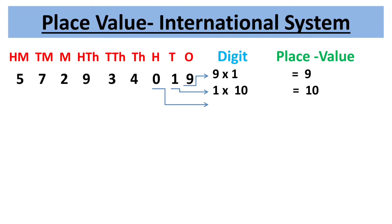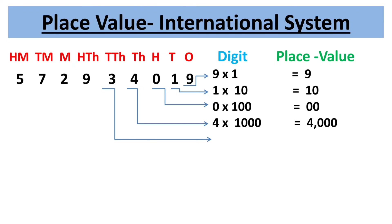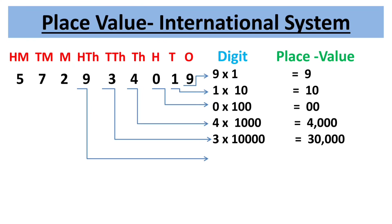Place value of 0 is 0 × 100 = 0. The second period is thousands, consisting of three place values: thousands, ten-thousands, and hundred-thousands. Place value of 4 is 4,000. Place value of 3 is 3 × 10,000 = 30,000. Place value of 9 is 9 × 1,00,000 = 9,00,000.